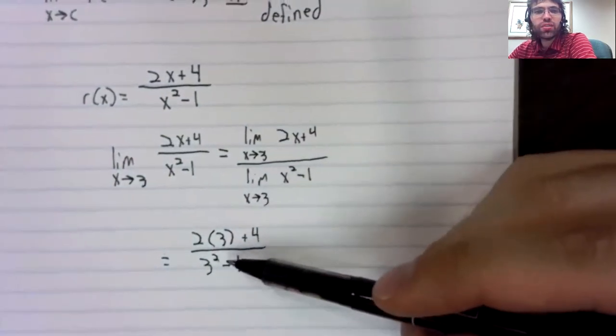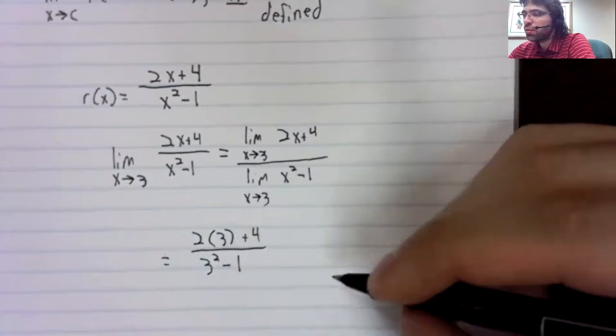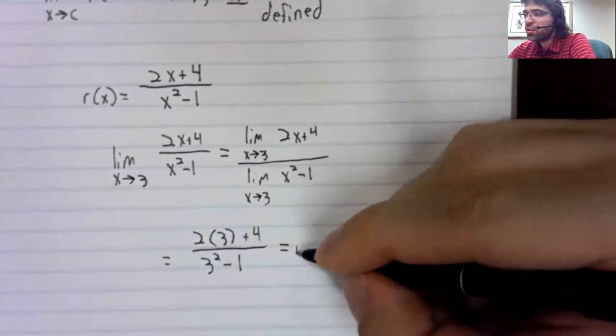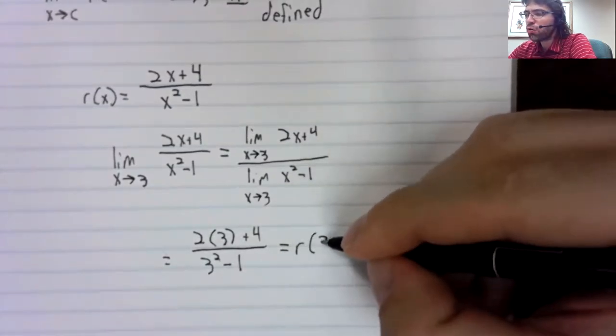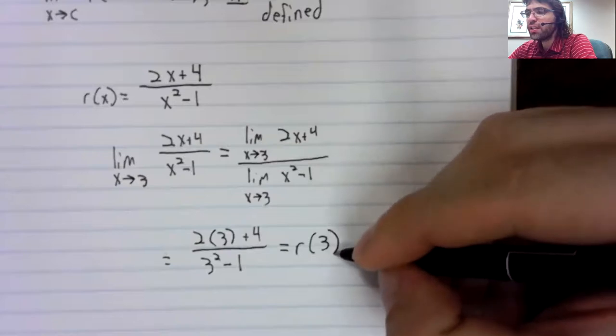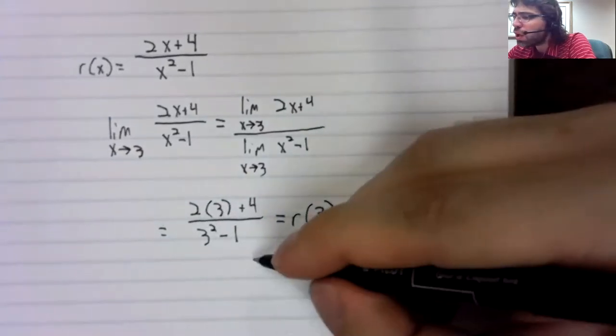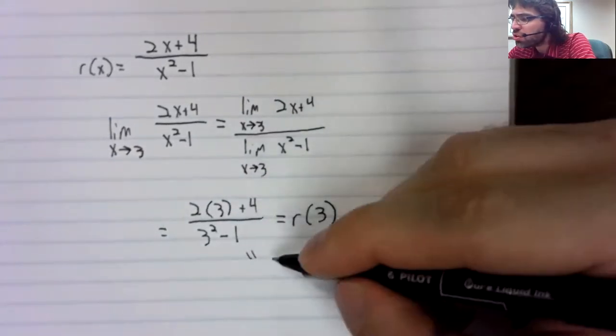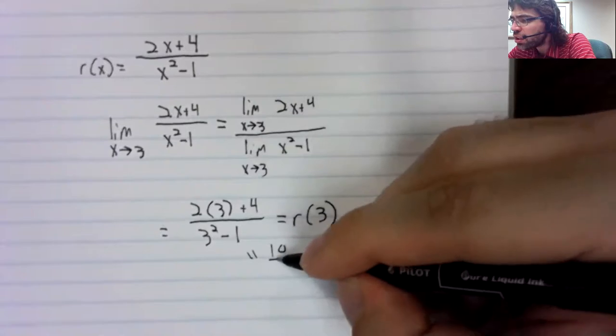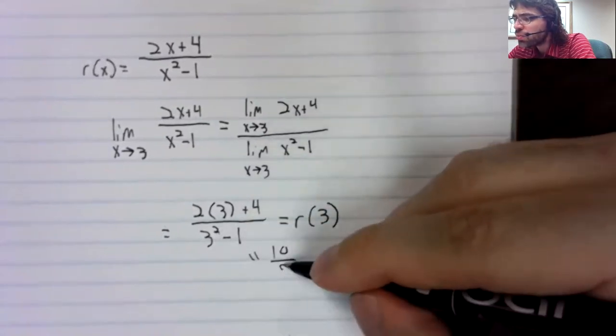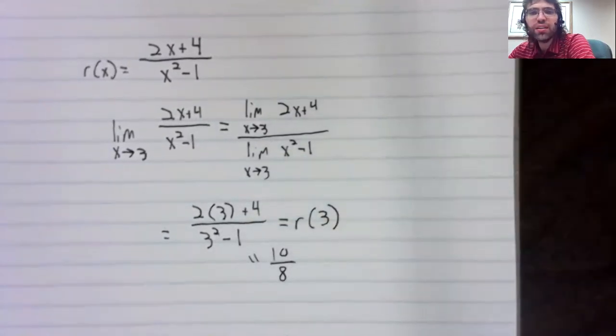And you see this expression here is r of three. And what is it? Six plus four is ten. Nine minus one is eight.